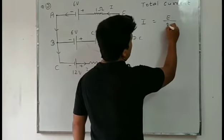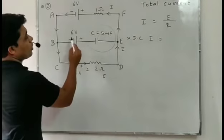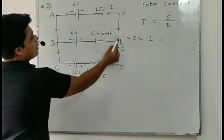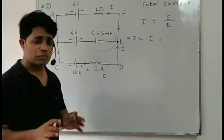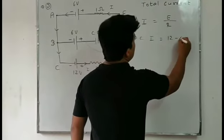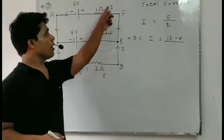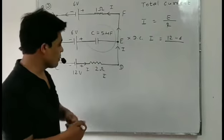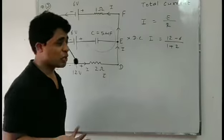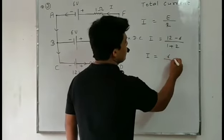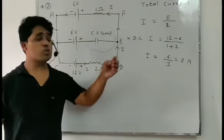Net EMF divided by total resistance. The capacitor branch is not considered because current is not flowing there. We have two cells — plus connected with plus — so like poles are connected at the terminal, and they will oppose each other. Net EMF = 12 − 6 = 6 volts. Total resistance: 2 ohm and 1 ohm are in series, so R = 1 + 2 = 3 ohm. Current I = 6/3 = 2 amperes.